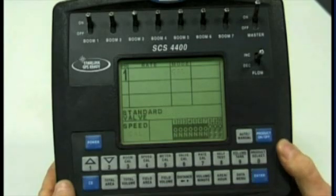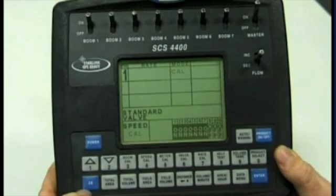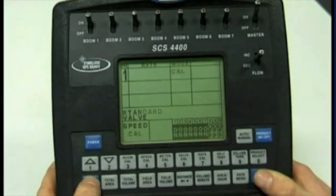Standard valve is the next calibration setting. This will depend on what type of valve you have on the sprayer. There's two kinds: standard valve and fast close valve. Simply press the CE button to scroll between the valve types.